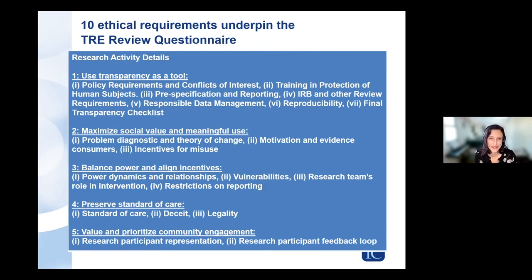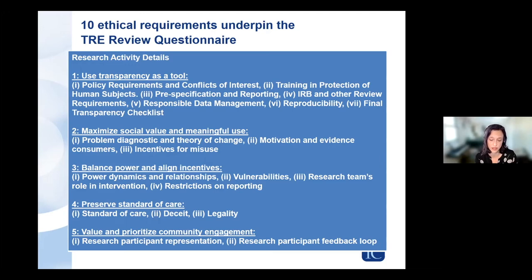Now for the heart of the questionnaire: the 10 ethical requirements. The first requirement is to use transparency as a tool. This is where we request the research team to document their assessments of conflicts of interest, the extent to which staff and consultants are trained on protection of human subjects, their use of pre-specification and standardized reporting materials, how they have navigated IRB review requirements, practices to ensure responsible data management, and internal and external reproducible workflow. We also conduct an internal push-button replication exercise before any final paper submission, and we ask teams to complete a transparency checklist so they're clear on what will be published and what won't and why — at least be transparent about what we can't be transparent about.